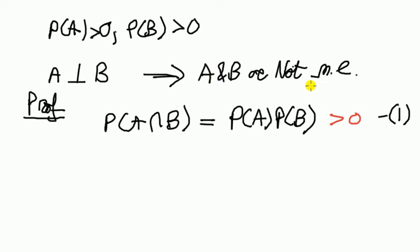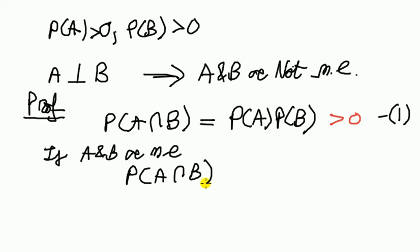But what does it mean to say A and B are mutually exclusive? If A and B are mutually exclusive, it means they can't both happen, same as saying probability of A and B is equal to zero. Let's call this equation two.